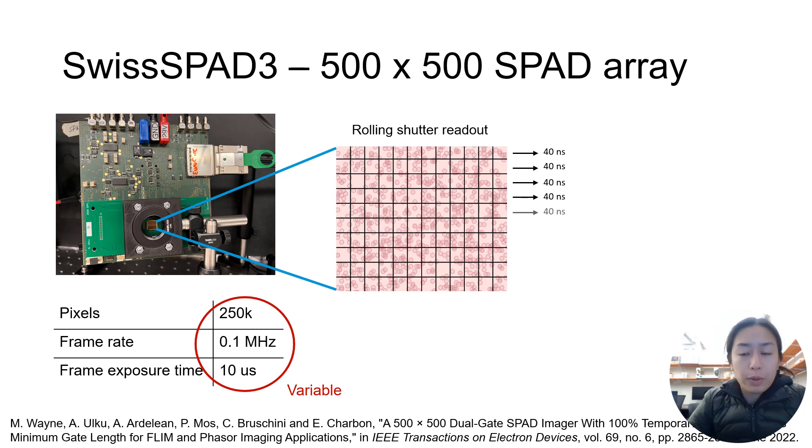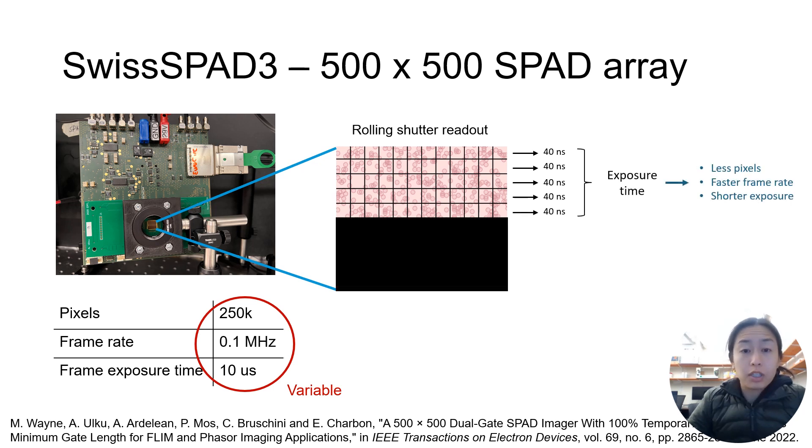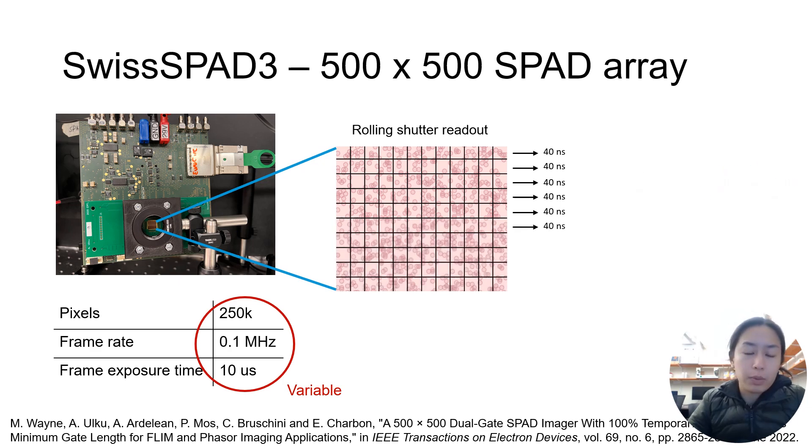With less readout rows, we will have a faster frame rate and a shorter exposure, but obviously less signal, and the more pixels that are read out, we will have a slower frame rate and a longer exposure.